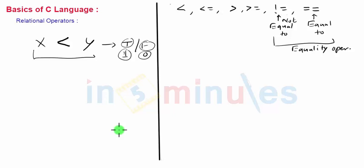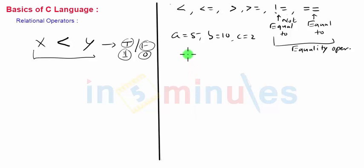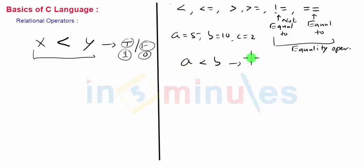Now let's see how these operators work — they are really very simple to understand. Let's say a is 5, b is 10, and c is 2. A simple expression can be a less than b. This expression results in true or false according to whether a is less than b. In our case, since a less than b is correct, the answer will be true, that is 1.